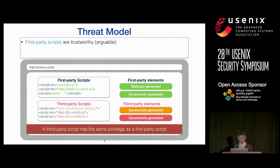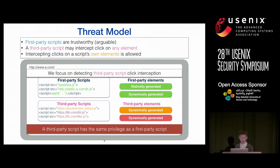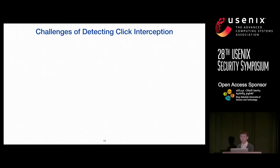In this work, we assume first parties are trustworthy. Third-party scripts, on the other hand, can intercept clicks on any element in the same page and frame. We consider it acceptable for them to intercept clicks on elements they themselves created. So we are interested in detecting third-party scripts intercepting clicks on elements not created by them. To detect click interception, we face several challenges.